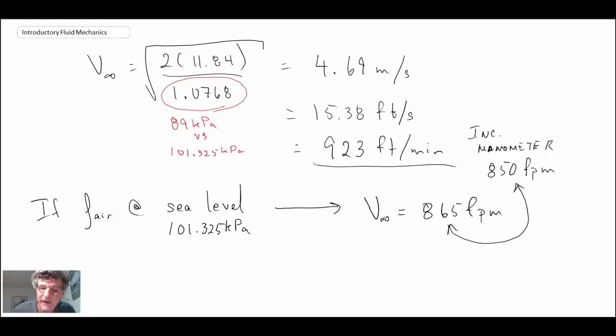For where I did do the experiment, the correct velocities are the ones we have here. So 923 feet per minute or 4.69 meters per second. That gives you an example of making a measurement using the pitostatic tube. I showed you it using an incline manometer, but you can use an electronic pressure transducer or any other type of pressure measurement to figure out what the delta p is on the pitostatic tube.